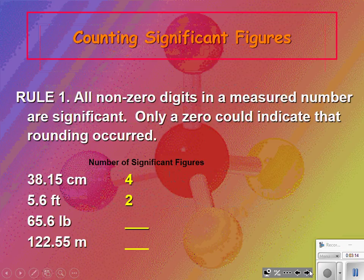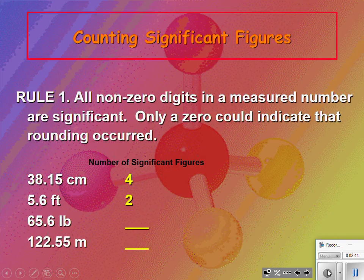We have rules that we follow on significant figures. Rule number one: all non-zero digits in a measured number are significant. Only a zero could indicate that rounding occurred. So 38.15 has four significant figures — none are zeros. 5.6 has two, 65.6 has three, and 122.55 has five. If you have non-zero digits, they are all significant.